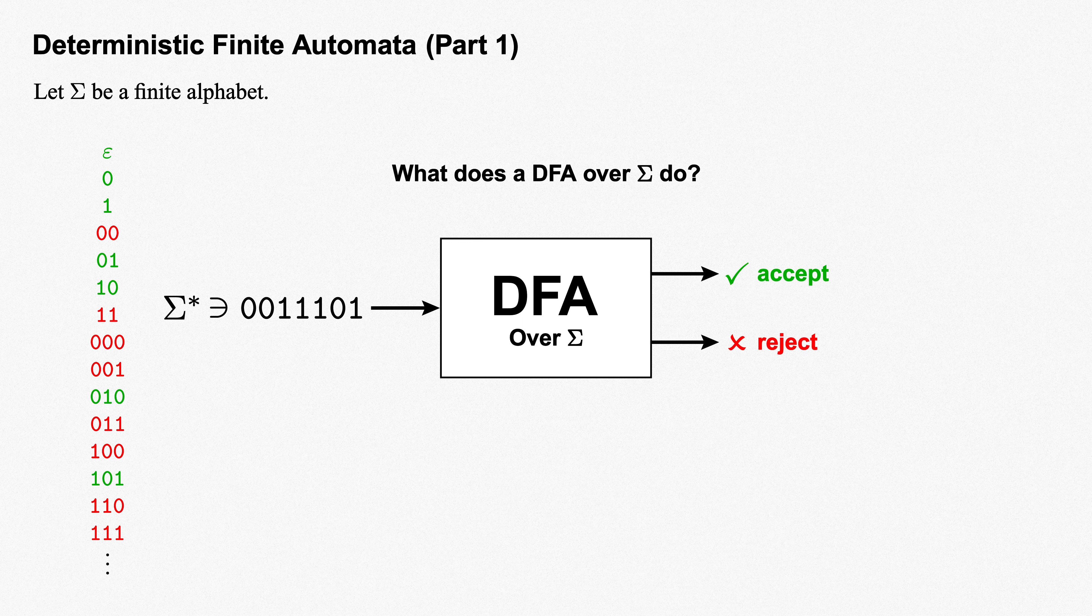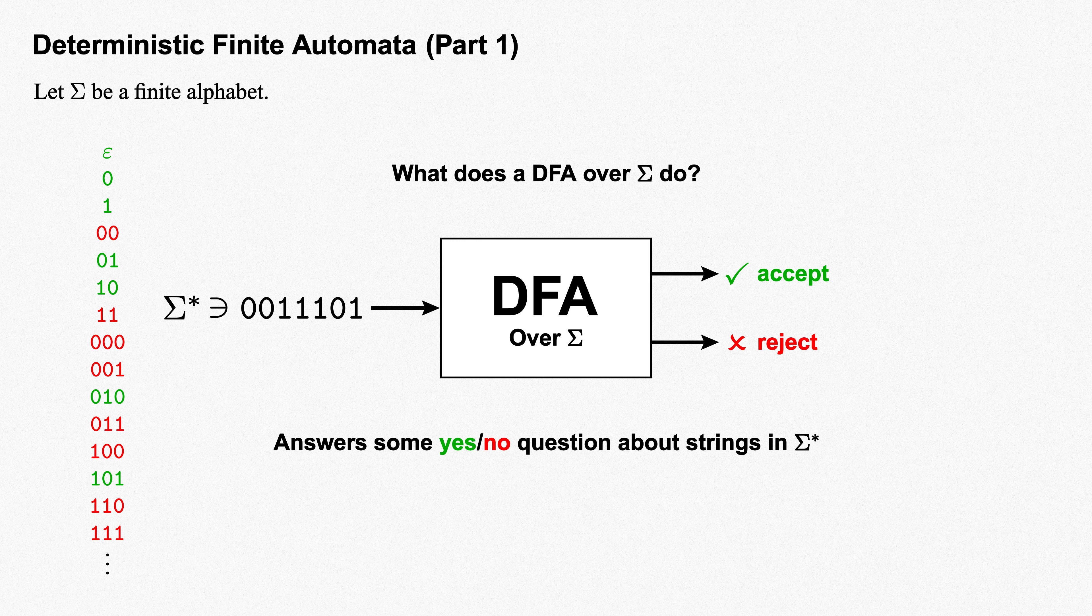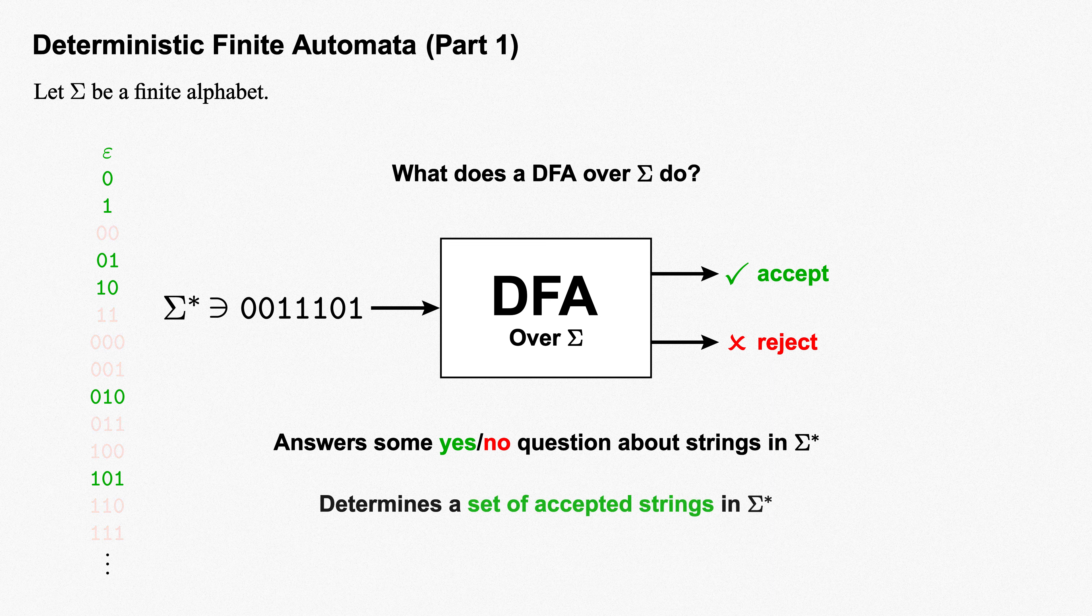Thus, a deterministic finite automaton can be considered to answer some specific yes-no question about those strings, or equivalently, to define a set of strings accepted by the DFA.